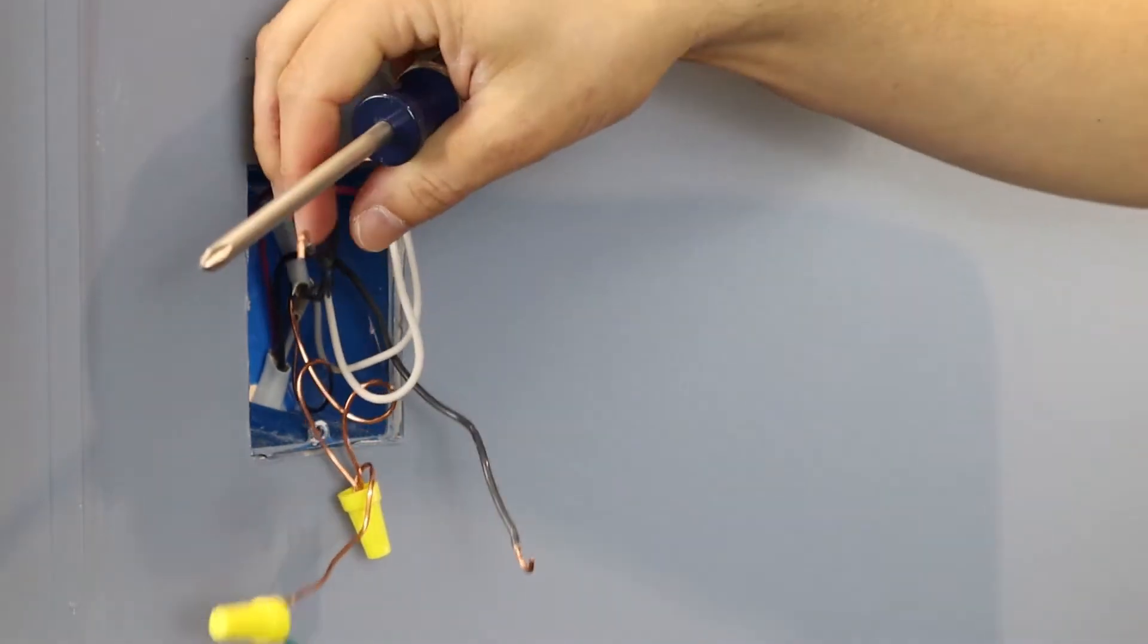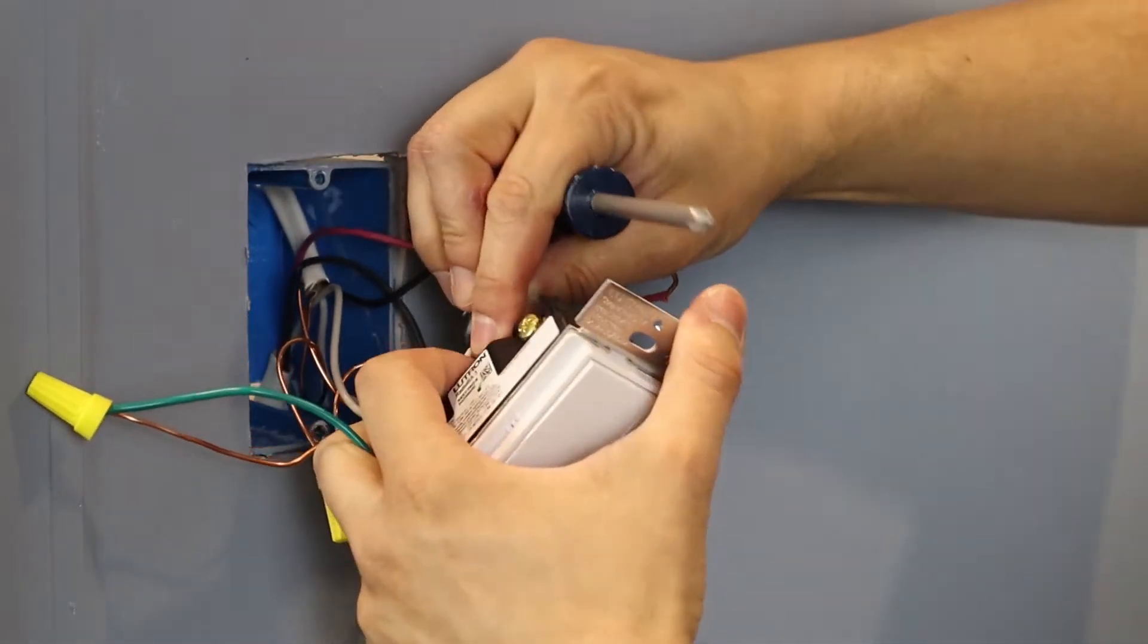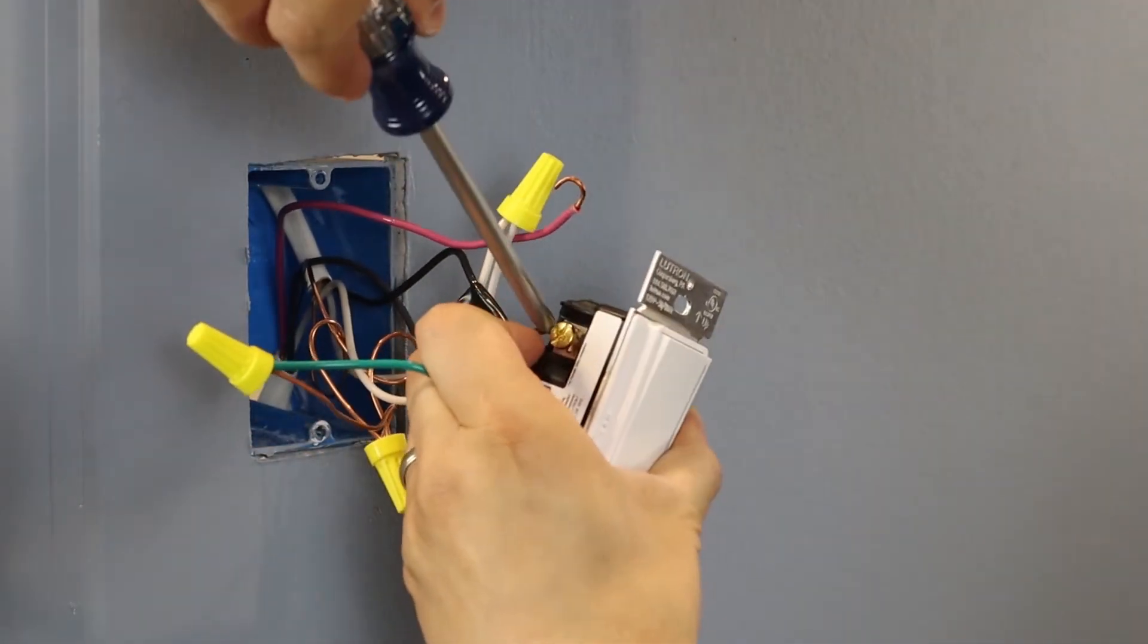Next, connect the tagged common wire to the brass screw on your dimmer. You should now have two travelers left in your wall. These two wires will connect to the black and blue screws. It's important to note which color wire is connected to the blue screw as you'll need to know this in the other location.